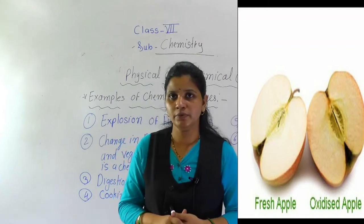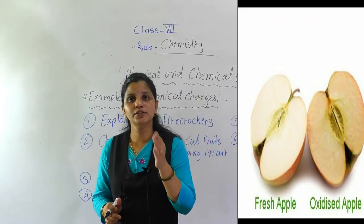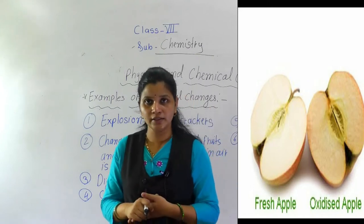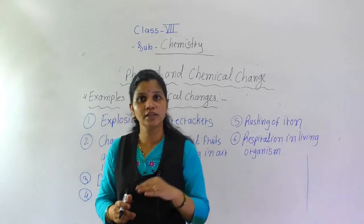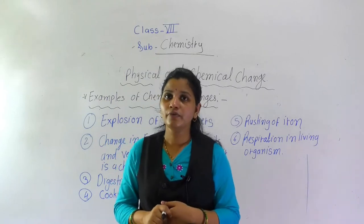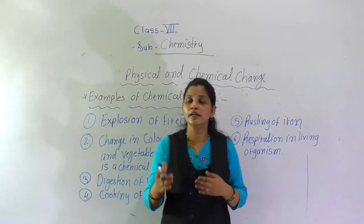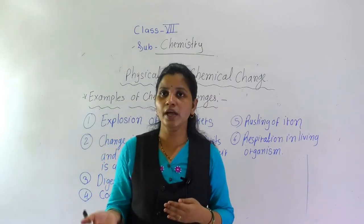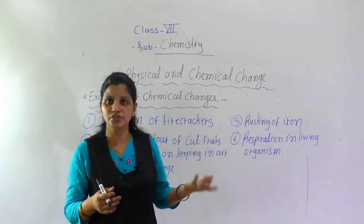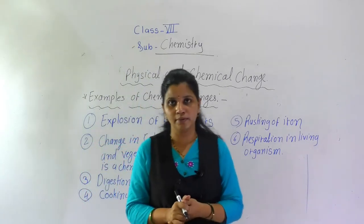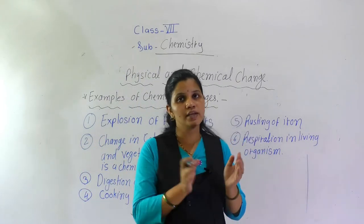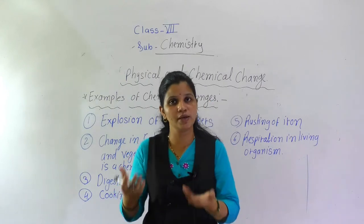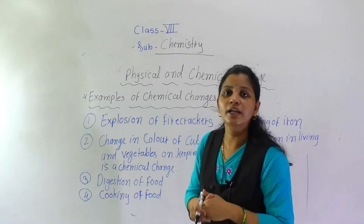The same applies to vegetables. If you cut a potato and leave it, after some time the color changes to black. This is because it reacts with the oxygen. Because of that the color is changing. In this reaction, a chemical reaction occurs, so it is a chemical change.